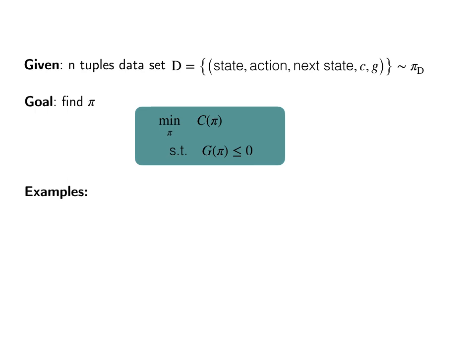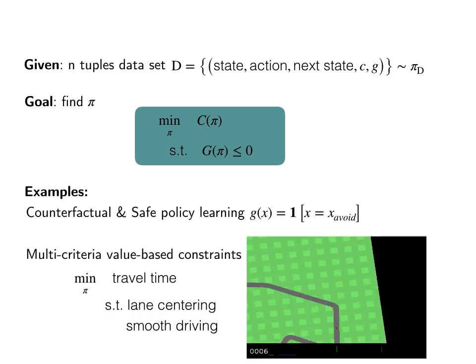So one example of this formulation is we can study safety in a counterfactual manner. And by counterfactual, I mean that after the system has been running for some time, we realize that the system is exhibiting certain undesirable behaviors. So we can introduce a new cost G after the fact that effectively penalizes the error state.